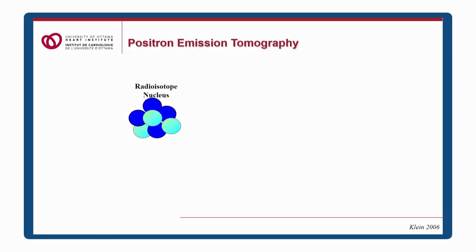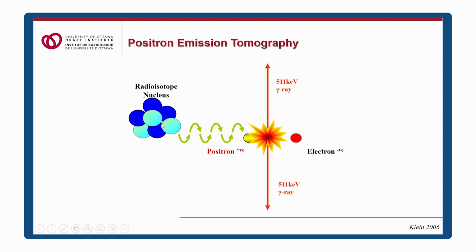First, what is PET? PET is positron emission tomography, beginning with a radioisotope nucleus that emits a positron that collides with an electron. The positron is actually antimatter — which is pretty remarkable.